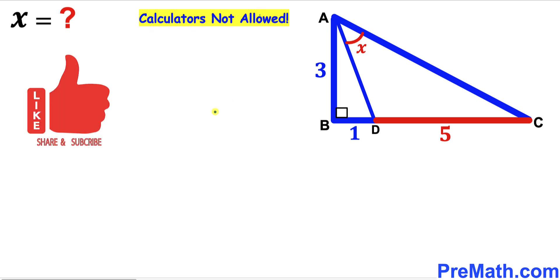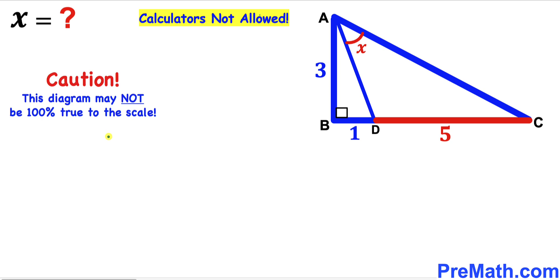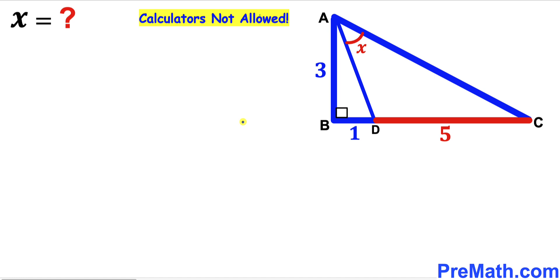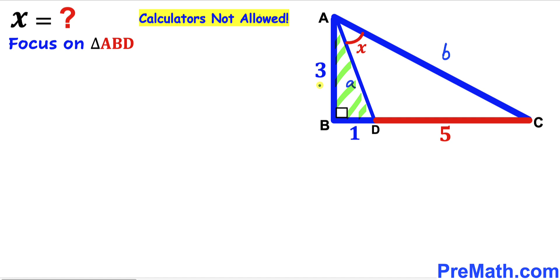Please don't forget to give a thumbs up and subscribe, and keep in mind that this figure may not be 100% true to scale. Let's get started. We are going to label segment AD as lowercase a and label this whole big side AC as lowercase b. Now let's focus on triangle ABD.